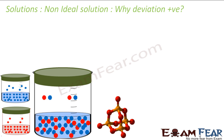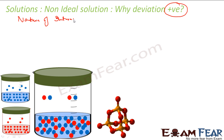The question is: why does this deviation occur? Why is there a positive deviation or a negative deviation? The answer lies in the nature of interaction at the molecular level.